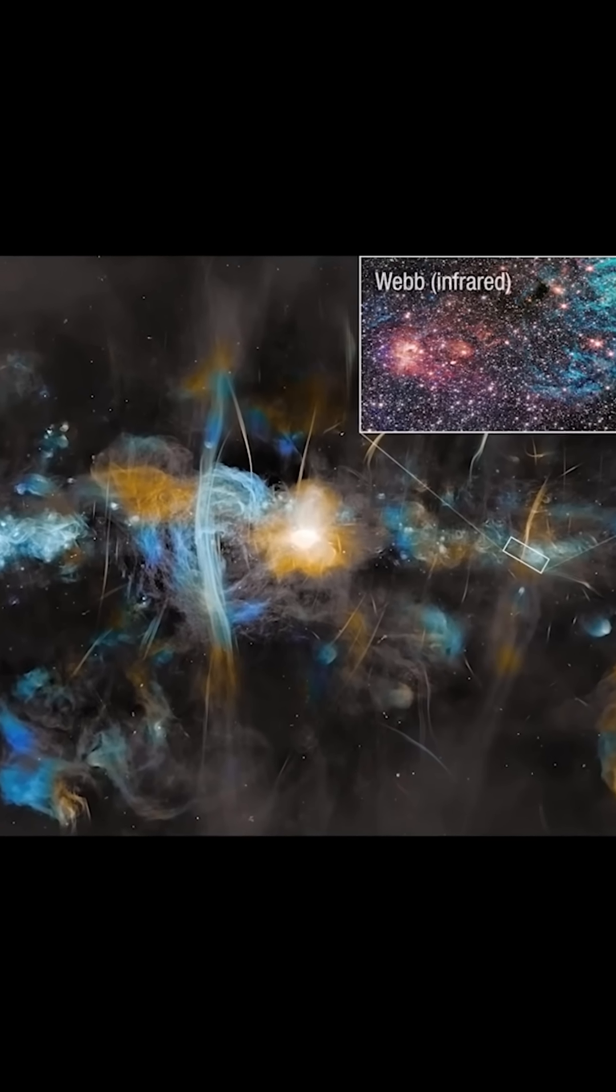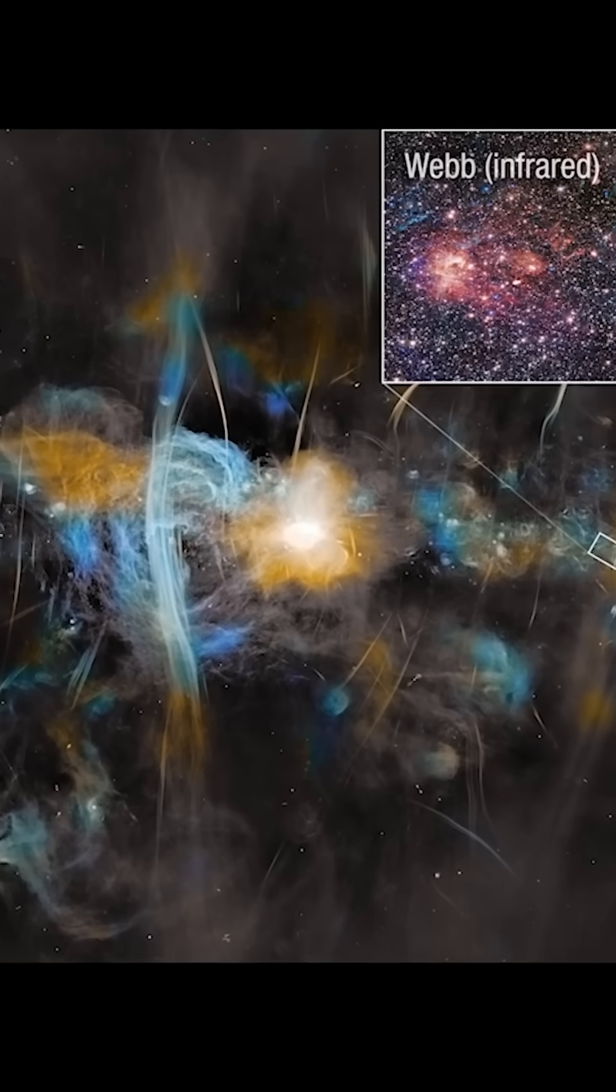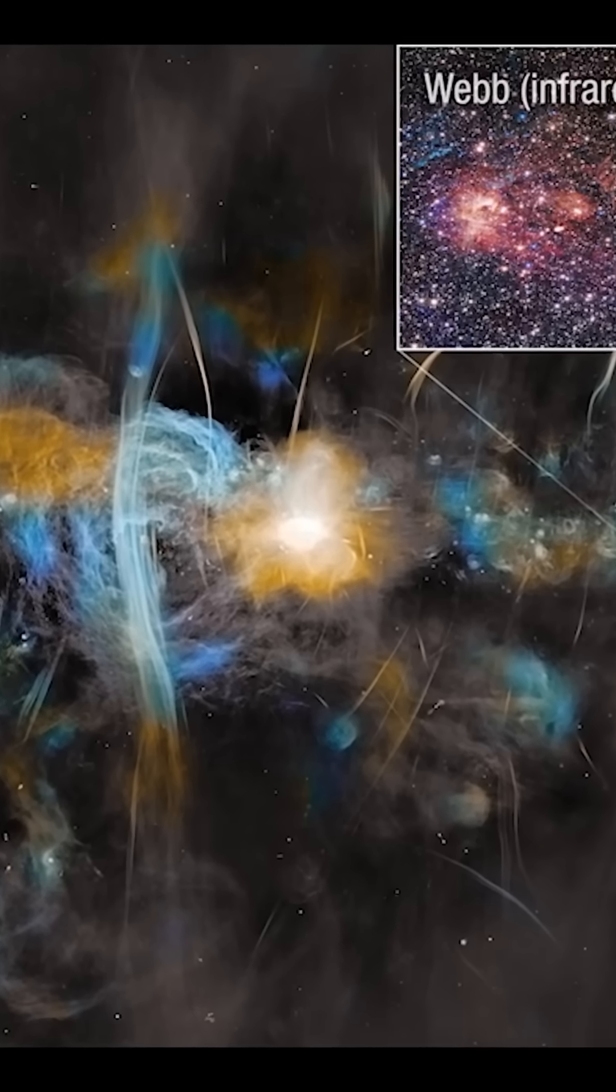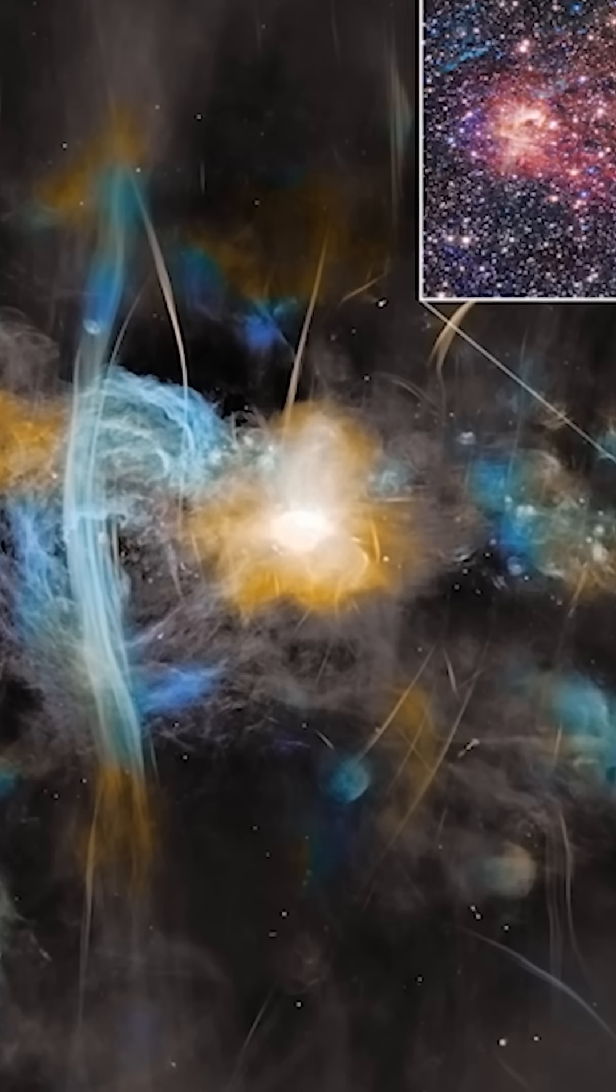Huge vertical filamentary structures echo those captured on a smaller scale by Webb in Sagittarius C's blue-green hydrogen cloud.